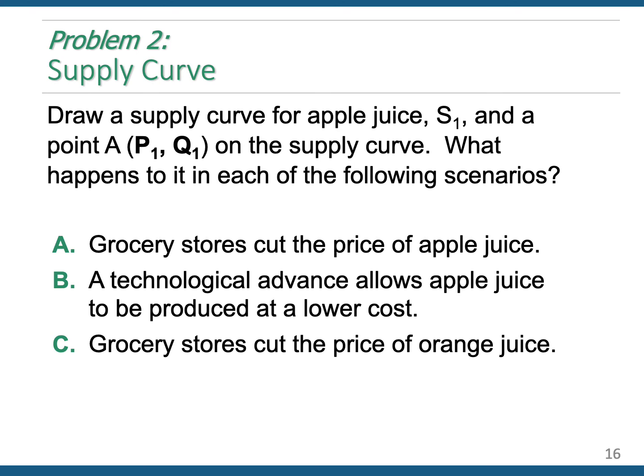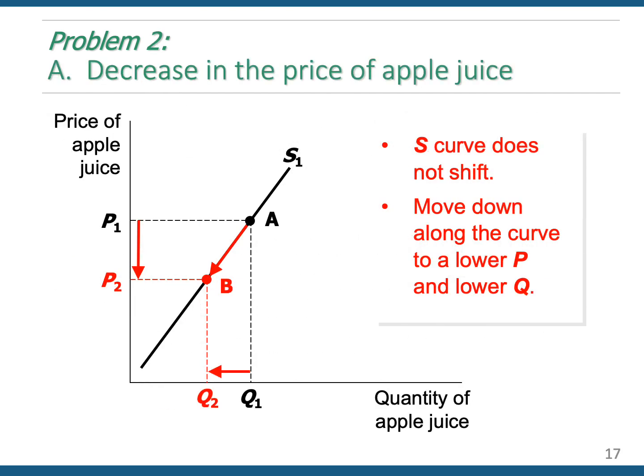This is the market for apple juice, and we're only interested in supply right now. What happens in the market for apple juice when each of these scenarios occurs? The first: grocery stores cut the price of apple juice. Does this affect the quantity supplied or does it affect overall supply? The only thing that's changing is the price of the product, so this does not shift the curve. And if the price of the product goes down, the quantity supplied goes in the same direction — that's the law of supply. As the price goes from P1 to P2, the quantity supplied goes from Q1 to Q2, a decrease in the quantity supplied. That is the answer.